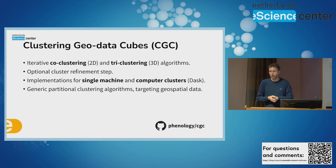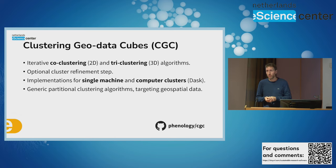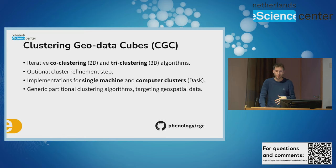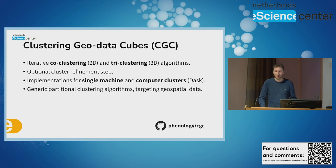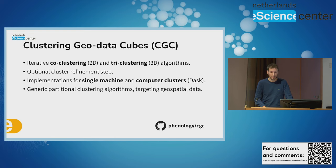We do that by exploiting the Dask library. The algorithms implemented in CGC are quite generic, so they can be applied to basically any positive data matrix. When selecting the specifics of the algorithms, or in the documentation and tutorials, we try to make it suitable for spatial data analysts. This is the GitHub repo where you can find the code.